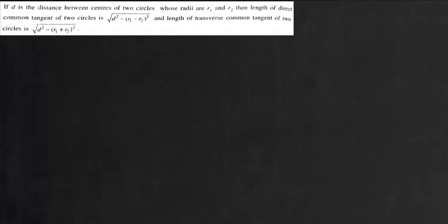Your question is: if d is the distance between centers of two circles whose radii are r1 and r2, the length of the direct common tangent is given by √(d² − (r1 − r2)²), and the length of the transverse common tangent is given by √(d² − (r1 + r2)²).